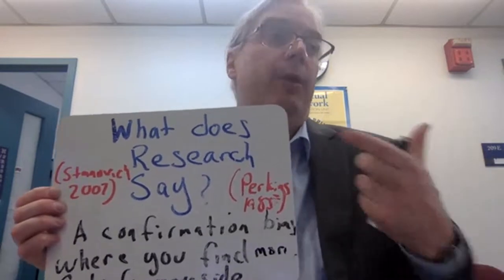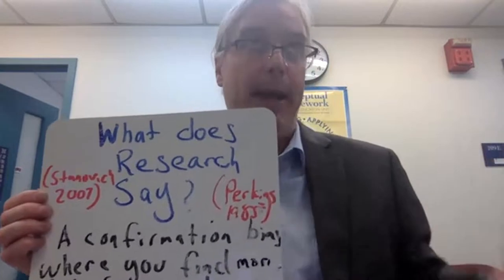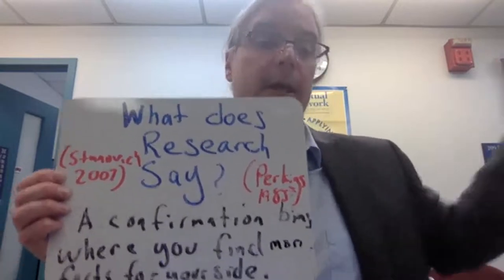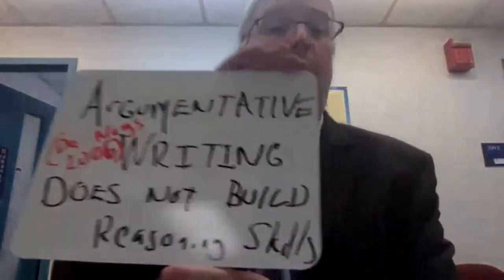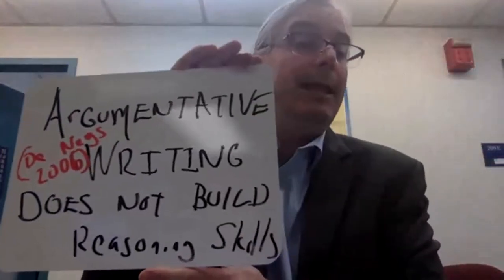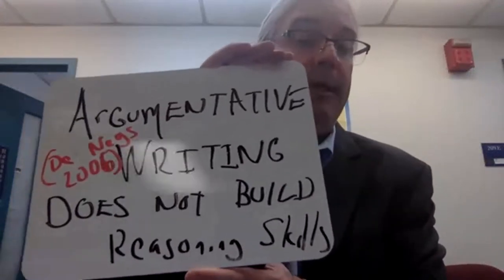When you pick a position you already believe in, you will find more support for that position than you will find for counter positions. This means the way we teach argumentative writing in school does not reinforce or build reasoning skills. The way we teach argumentative writing traces back to a gentleman named Toulmin, who came out with his model of argumentation back in the 1950s — and really, this traces all the way back to ethos, pathos, and logos from the Greeks.